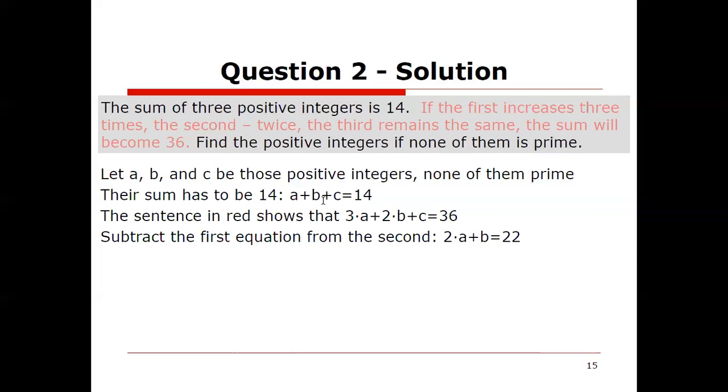If we subtract the first equation from the second, we will indeed have all the c's cancel out. 36 minus 14 is 22. And then 3a minus a is 2a. 2b minus b is just b. So there we are. 2a plus b equals 22.